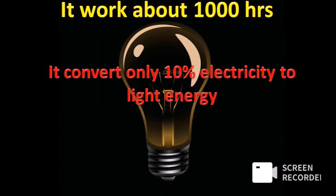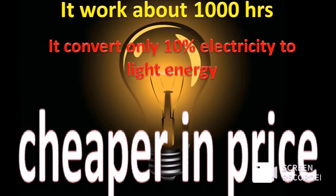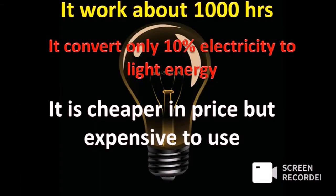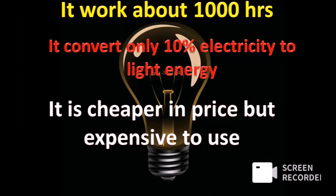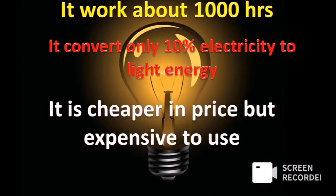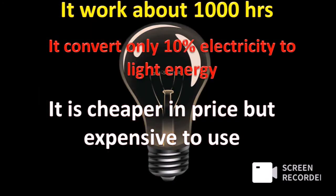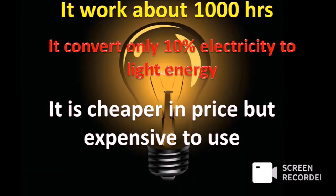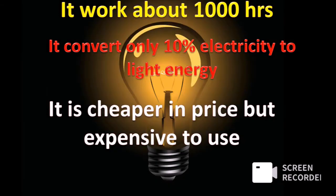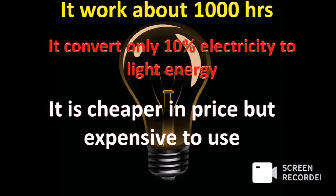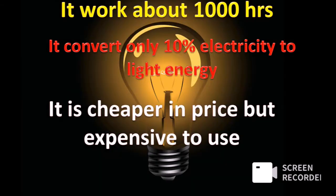A filament lamp works for about 1000 hours. It converts only 10% of electricity to light energy, so it is cheaper in price but expensive to use. About 90% of electrical energy is wasted in the form of heat energy.